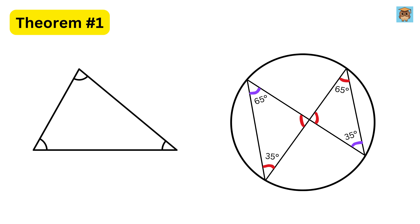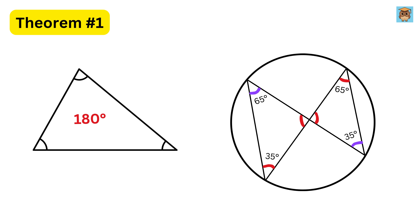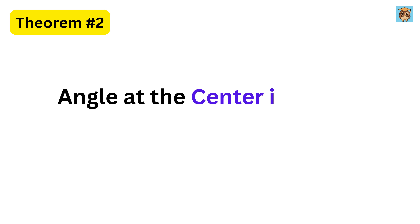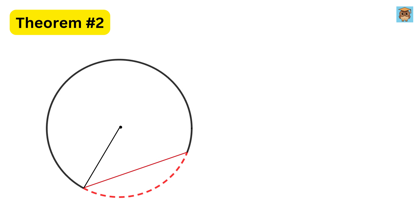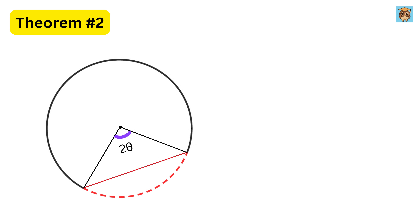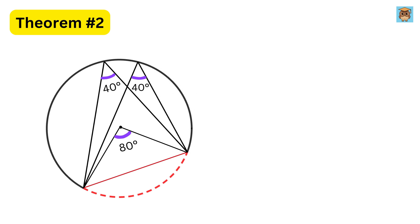The sum of all angles in a triangle is 180 degrees, so can you tell me in the comments what will be this angle? Let us move on to theorem number two: angle at the center is twice the angle at the circumference. This means the angle subtended by an arc at the center of the circle is always twice the angle subtended at the circumference by the same arc. So if this angle is 40 degrees, then this central angle will be twice of it, or 80 degrees. But if I draw like this, then this angle will be 40 degrees using the first theorem we just saw.